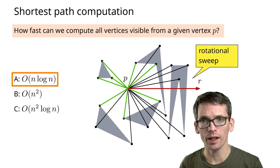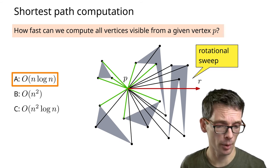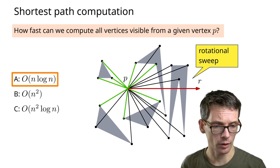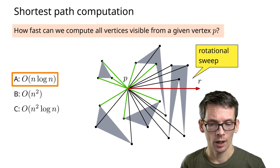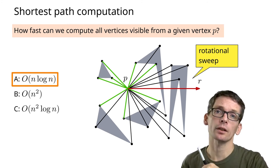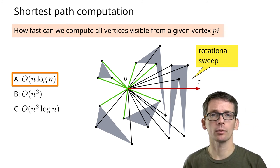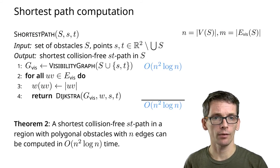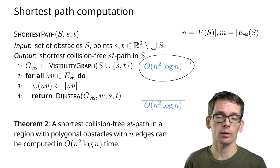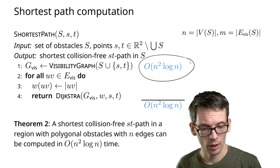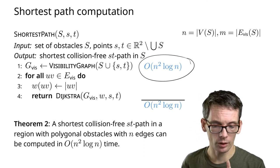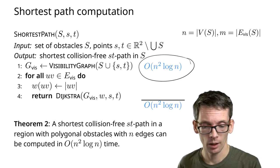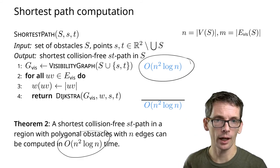We have linear number of events, need log n time per event, this will give us n log n time. We do this for every vertex of our obstacles, we have n of those, so this will give us n² log n, and that dominates our running time. We can compute a shortest collision-free path from s to t in n² log n time.